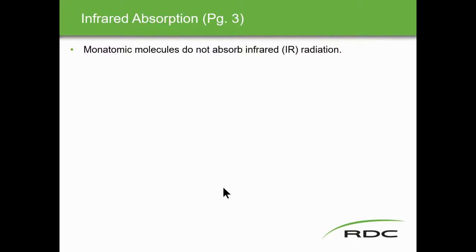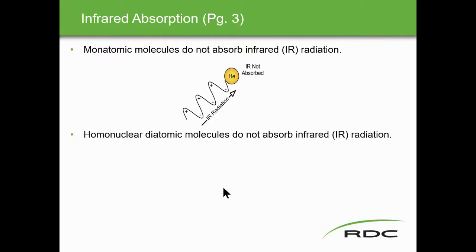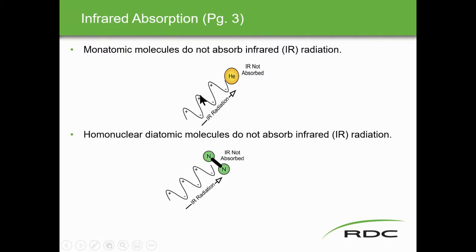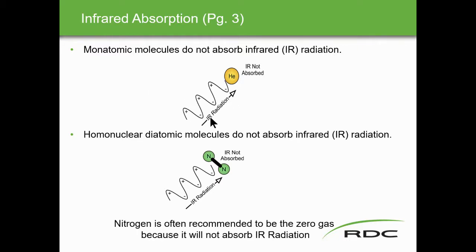Monatomic molecules, such as helium, do not absorb infrared radiation. Homonuclear diatomic molecules, such as nitrogen (N2), also do not absorb infrared radiation. We're looking at these frequencies — if the frequencies are similar to the IR light spectrum frequencies, it relates to cyclic radiation and vibration. Nitrogen is often recommended as the zero gas because it will not absorb IR radiation, and nitrogen is easier to obtain than helium.